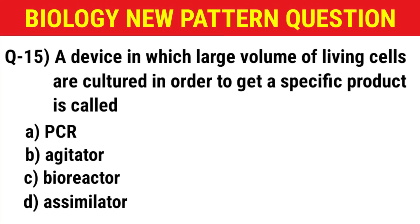Next question: A device in which large volumes of living cells are cultured in order to get a specific product is called — (A) PCR, (B) agitator, (C) bioreactor, (D) assimilator. The correct answer is option C: bioreactor.